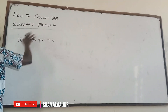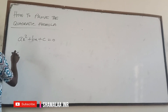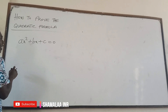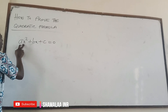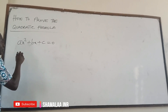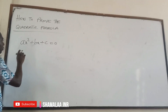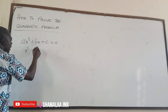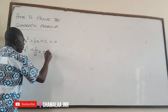We are trying to prove the quadratic formula. The first thing you do is make the coefficient of x² equal to one, and you do that by dividing through by a. When you do that, you get x² + (b/a)x + c/a = 0.